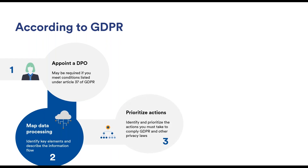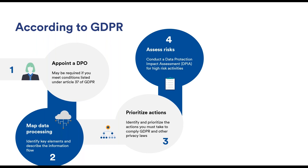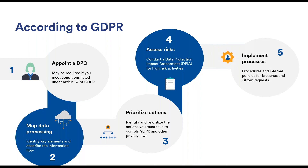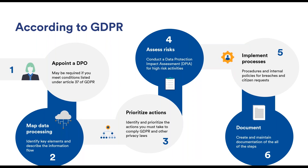Next, identify all required actions, assign priorities, and determine how you'll comply with the regulation and any specific in-country privacy laws. A Data Protection Impact Assessment, or DPIA, should be prioritized for higher-risk activities — assess the risks of your security activities, evaluate the impact of a potential breach, and implement the right procedures and internal policies for breach response and information requests. Protecting data and anonymizing information will be part of this. Finally, create and maintain documentation of every single step in the context of GDPR compliance.